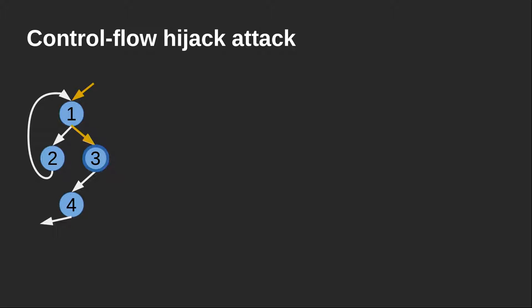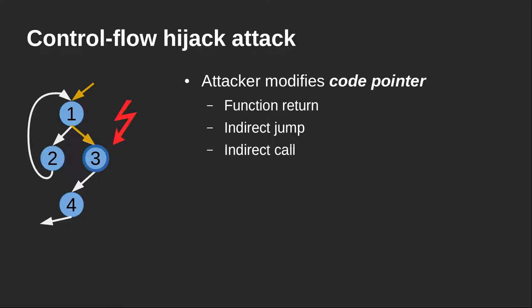The control flow moves from one node to another as we execute through the program. An attacker at one point might be able to modify a code pointer. Code pointers can be function returns, indirect jumps, or indirect calls — all instructions used on hardware to control how control passes from one basic block to another. If an attacker can control these code pointers, they can redirect execution to a different location.